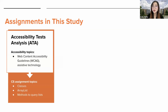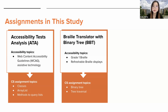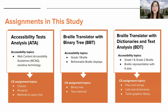There were three main assignments used in this study. The first is the accessibility test analysis assignment, focused on searching through an array list, where students looked at results of different automated accessibility checkers and learned about the web content accessibility guidelines as well as assistive technology. The second is the braille translator with binary tree, focused on creating a digital braille translator, representing braille encodings as paths within a binary tree. The third is the braille translator with dictionaries and test analysis, requiring students to implement a braille translator capable of converting English sentences into grade two braille using dictionaries, and using the turtle graphics library to draw six circles corresponding to a braille character.